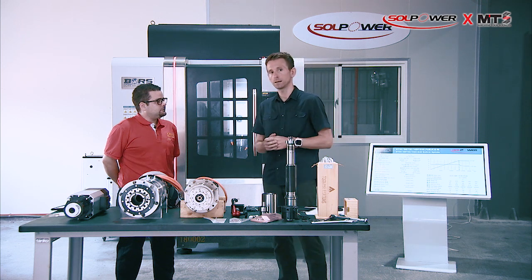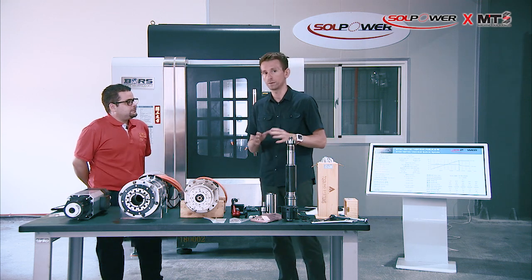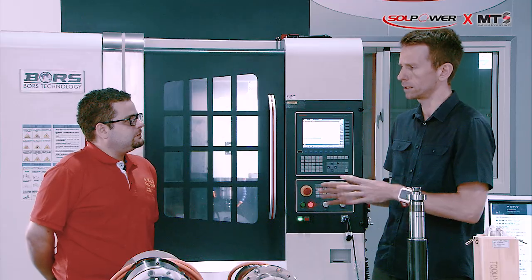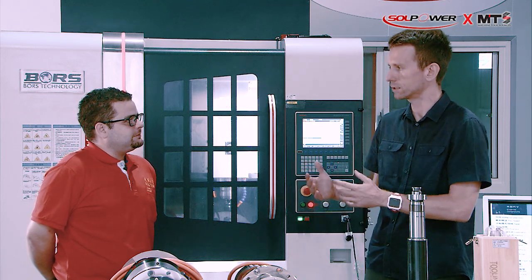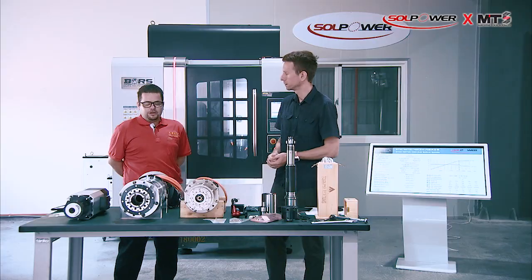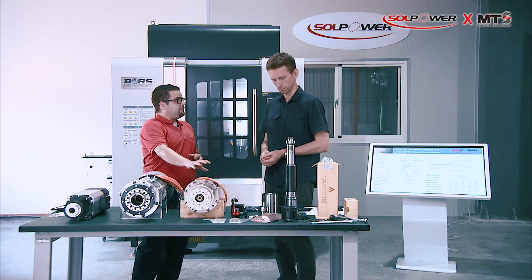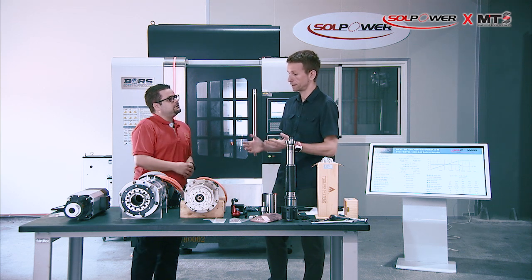Most people watching will be from the machine tool industry, so they'll be familiar with spindles — but maybe more familiar with conventional spindles such as belt-driven spindles. So to kick it off, why don't you give us the main differences between a conventional spindle and a motorized spindle? Well, the conventional one has an external motor which depends on gears and belts, but with the motorized spindle, the motor itself is built inside.